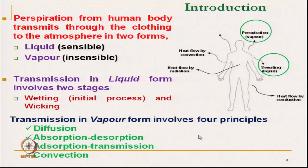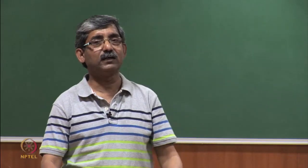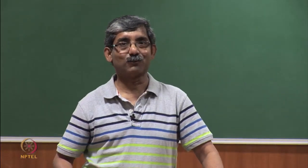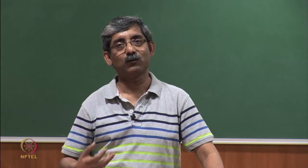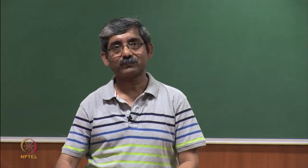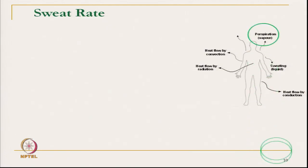First, we will start with the moisture transmission in liquid form. In clothing, the liquid we talk about is basically sweat. Before we discuss about wetting and wicking, we must know: what is sweat and how do we measure the sweating rate? It is actually perspiration in vapour form and perspiration in liquid form. Heat transmission through the vapour and liquid form is how we effectively transmit our heat. Here we are not discussing dry heat flow through convection, conduction, and radiation, because we have already discussed those.